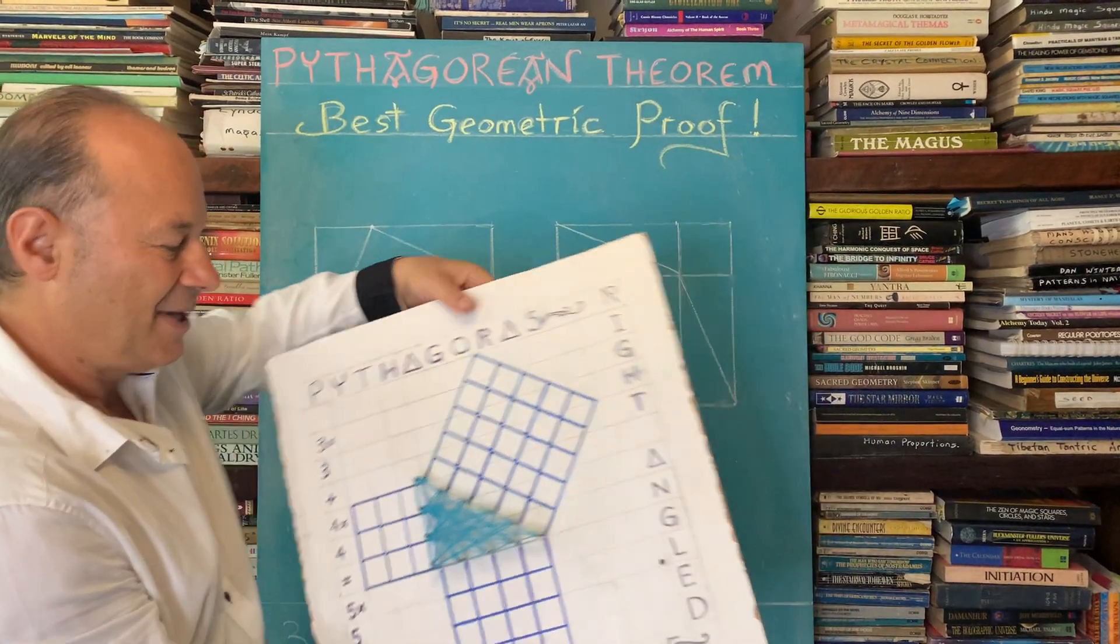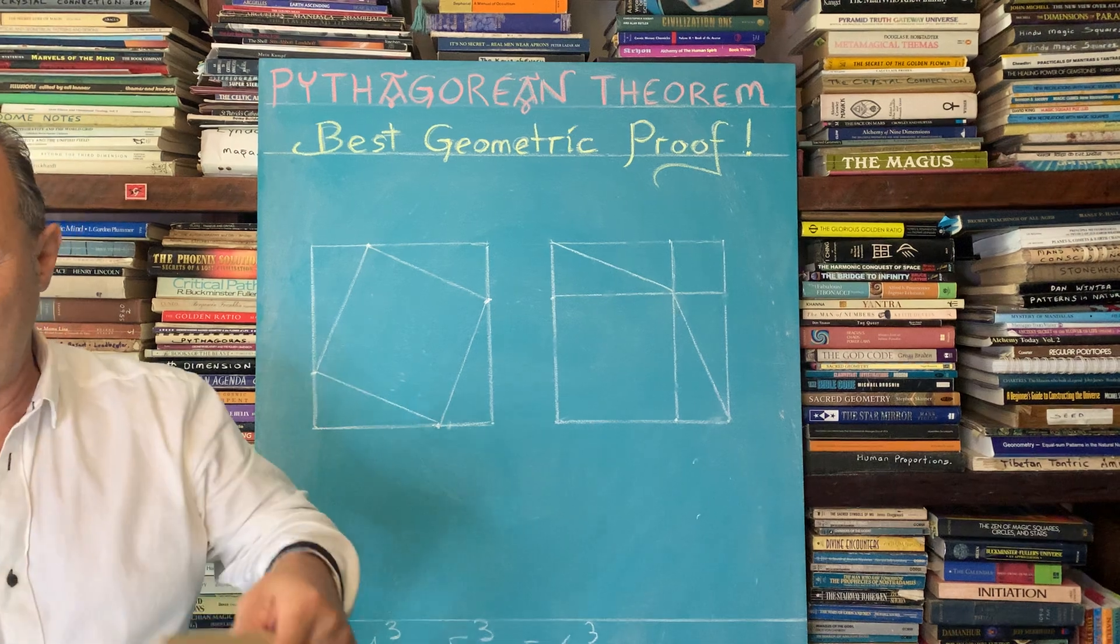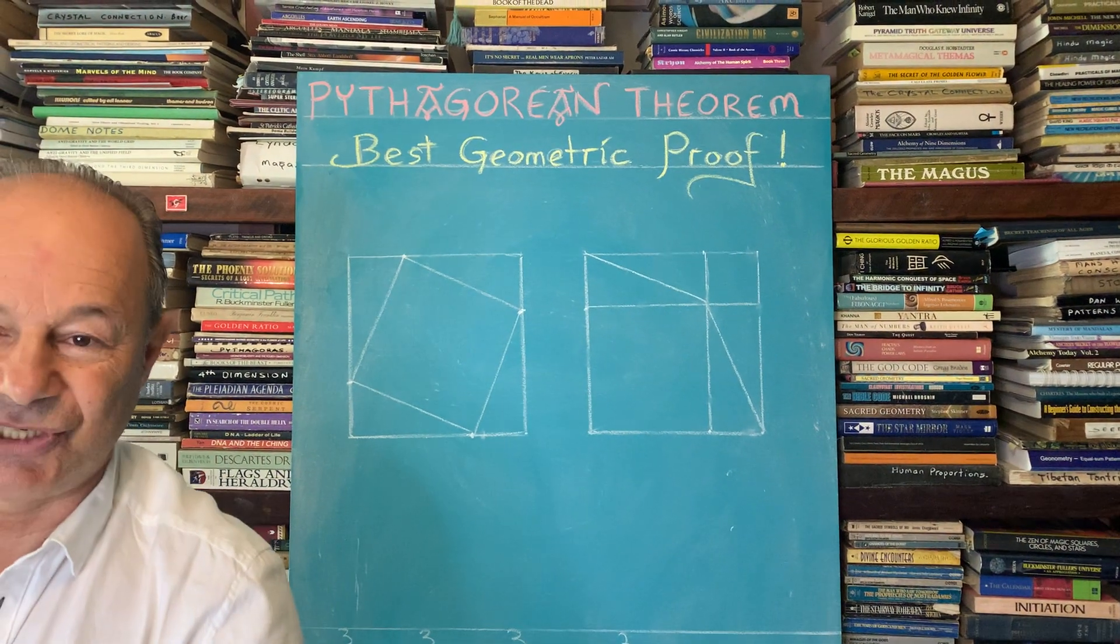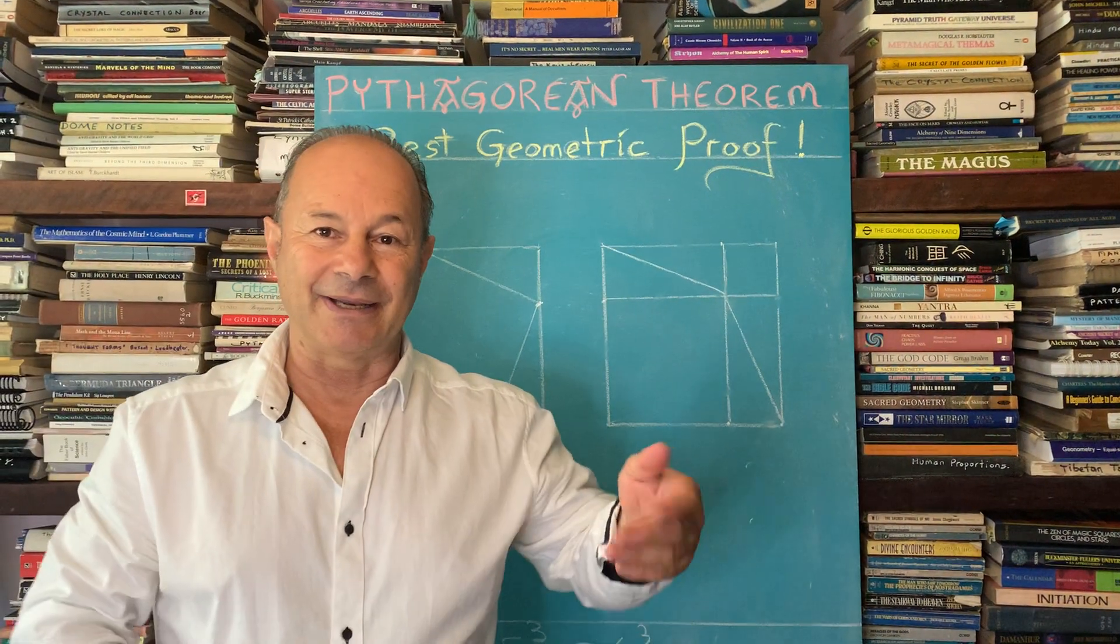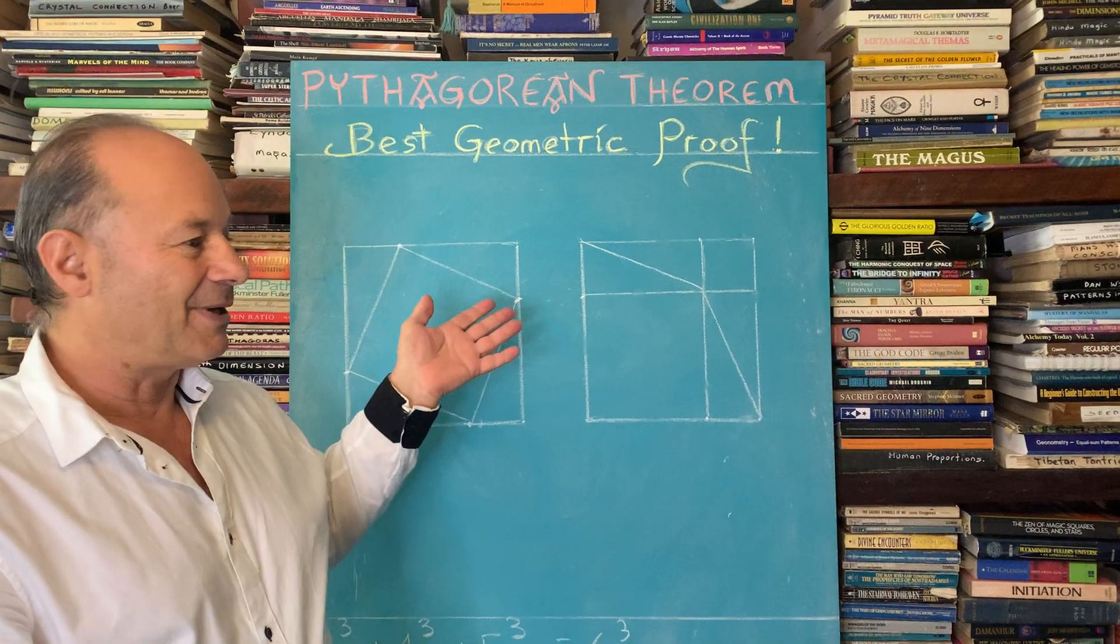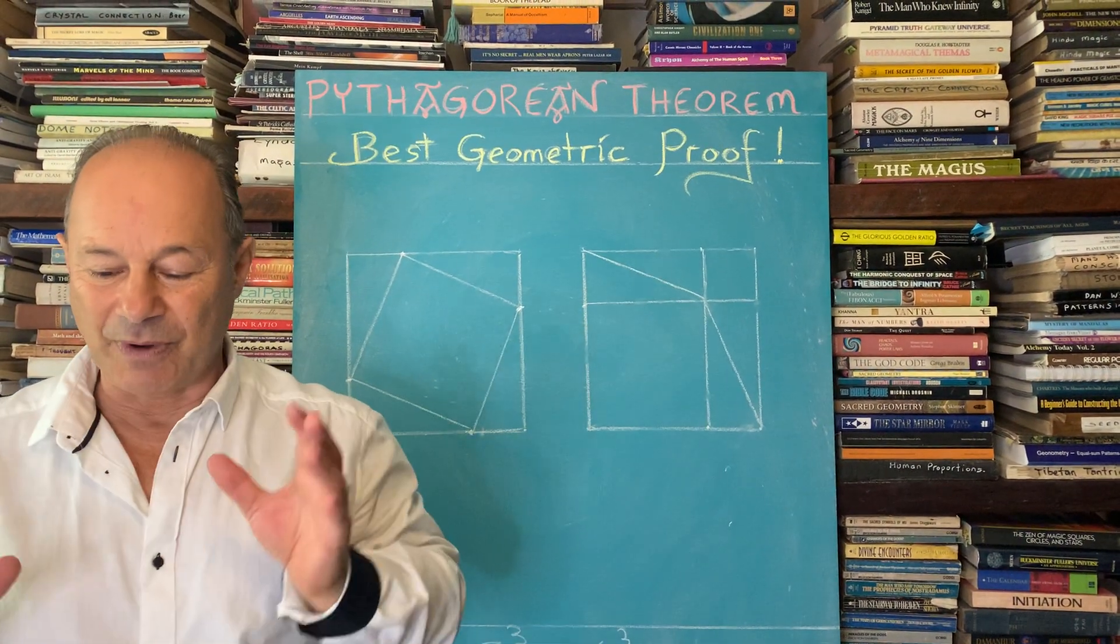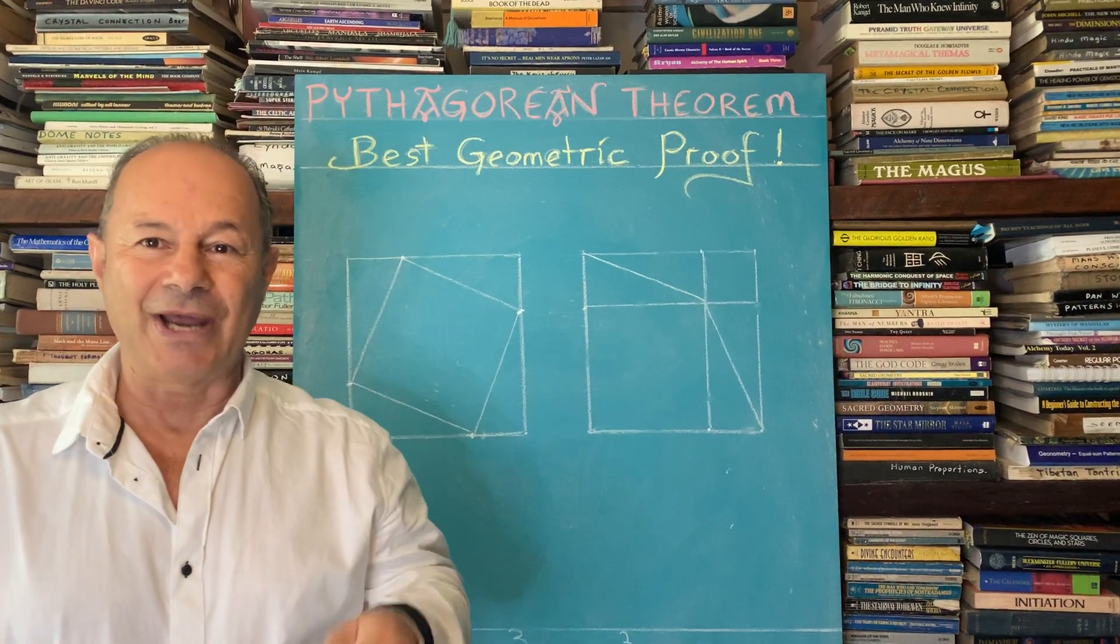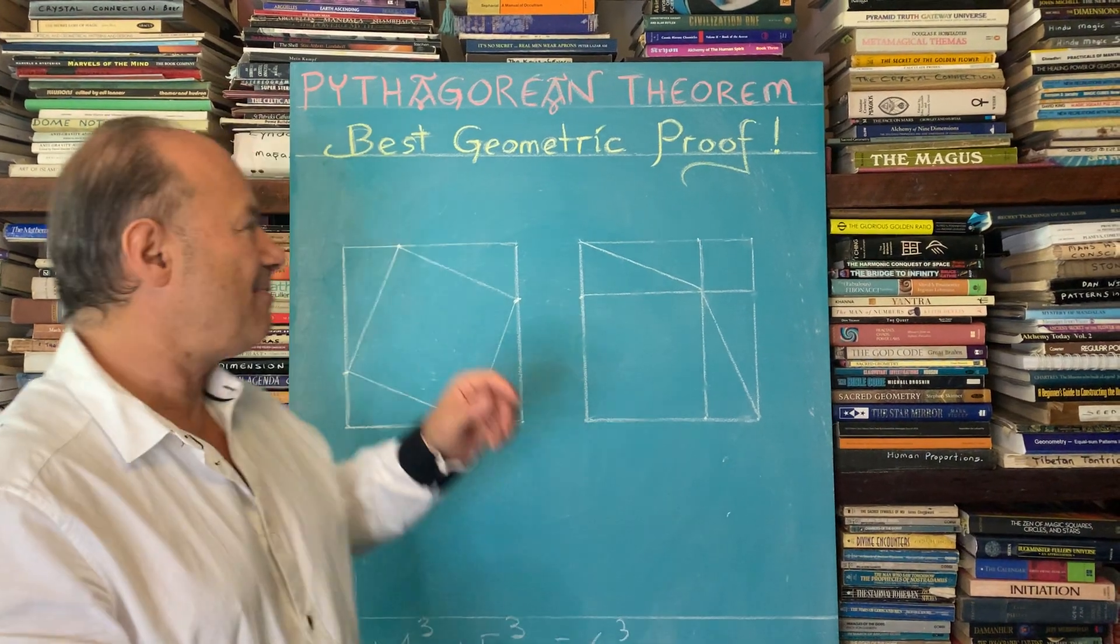But we have many ways of showing this geometrically, I mean algebraically. There's lots of formulas that show us how do we prove that, in fact there's 100 different ways how to do it and a lot of them are geometric.